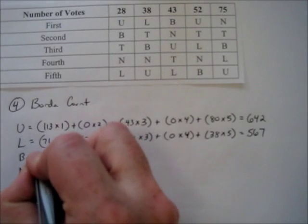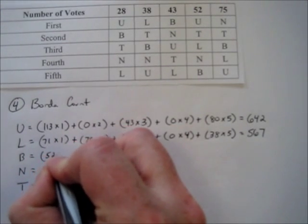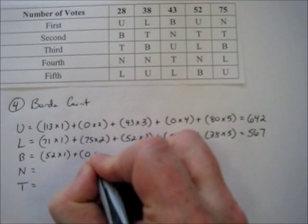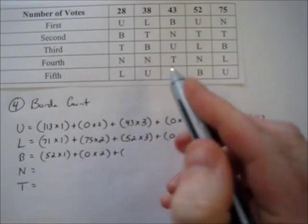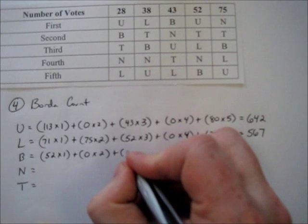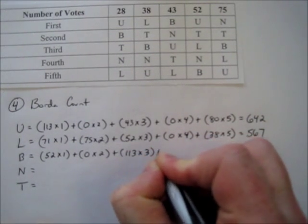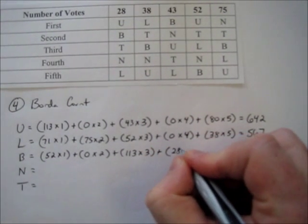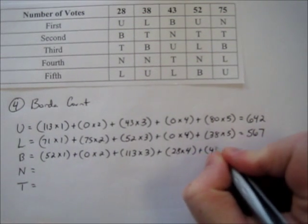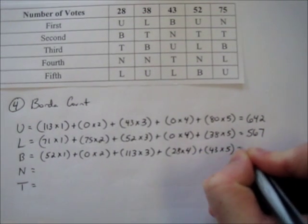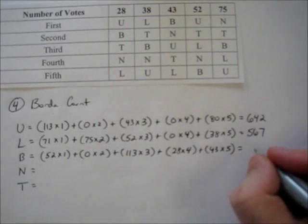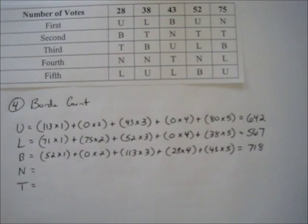For Blue Cantrell: 52 last-place votes each worth one, zero next-to-last-place votes, 38 plus 75 for a total of 113 third-place votes, 28 second-place votes, and 43 first-place votes each worth five. That gives a total of 718 points.